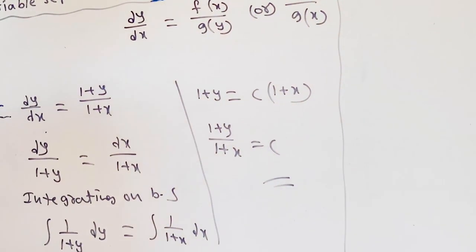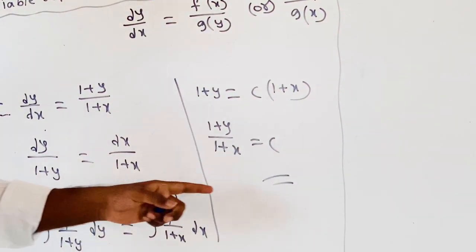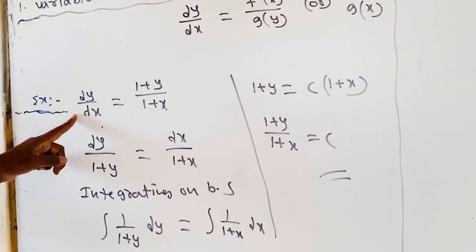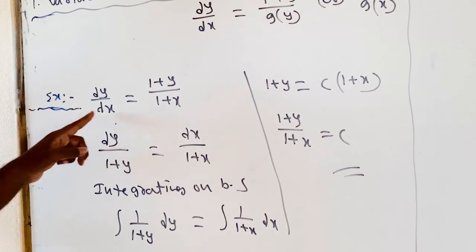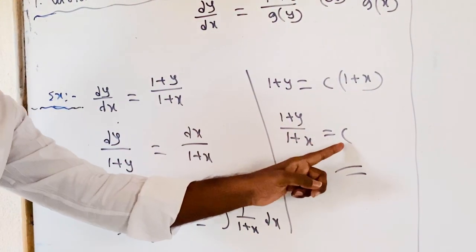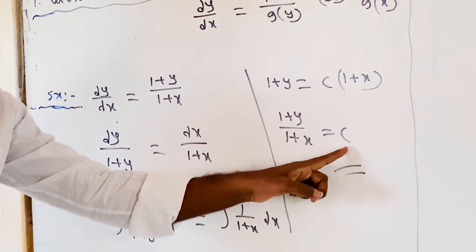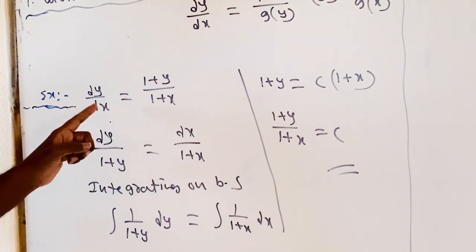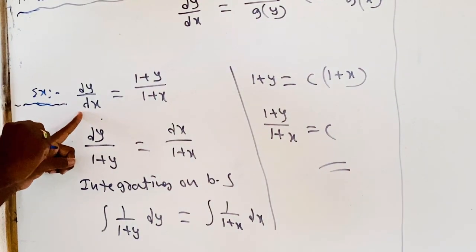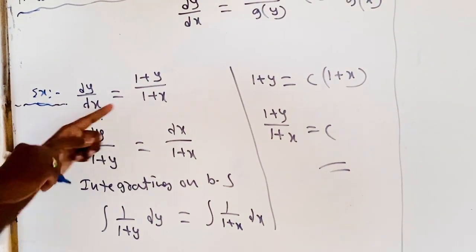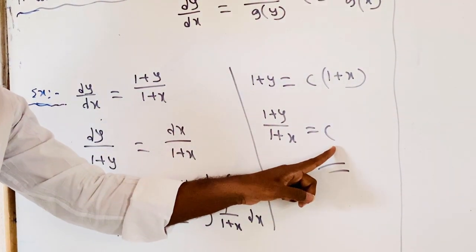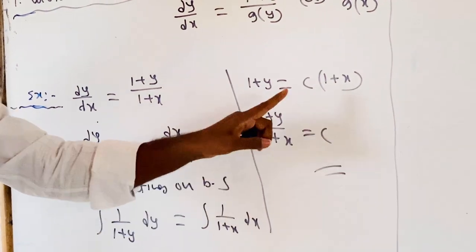This is the solution of the given differential equation. Observe that we have one parameter c. Since the given order of the differential equation is 1, it contains only one parameter.